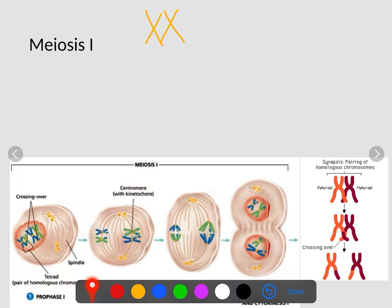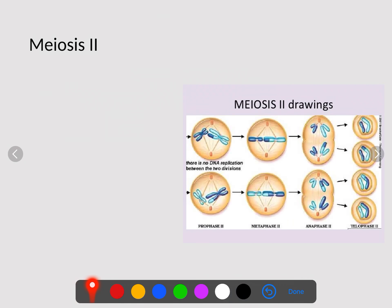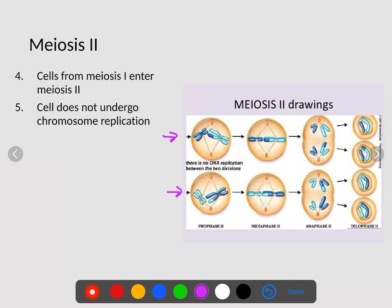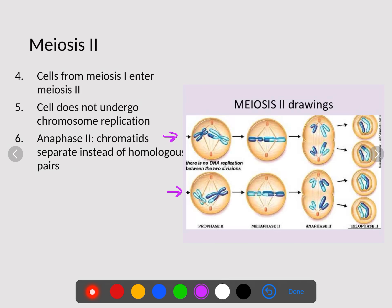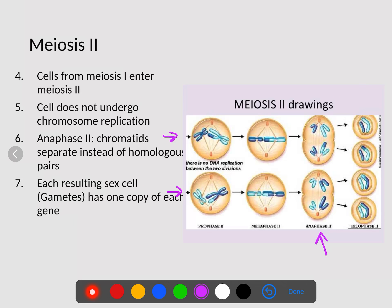In meiosis two, the cells from meiosis one now enter division. The cell does not undergo chromosome replication during meiosis two because we want to reduce the number of chromosomes in half. In anaphase two, instead of the homologous pair separating, it's our chromatids that separate. This is how we get half of the genetic information to both sides. Each resulting sex cell has only one copy of a gene — therefore we call it 1N or haploid in nature, with half the number of chromosomes.